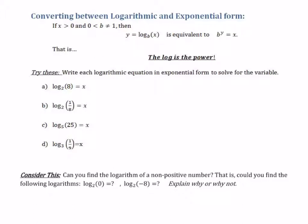Here we have log base 2 of 8 equals x. The question we're asking is: what is the power we put on 2 to get 8? If we rewrite this using the rule above, it means 2 to the x equals 8. We ask ourselves what number we can put on 2 to get 8 — that is 3, because 2 to the 3rd is 8.